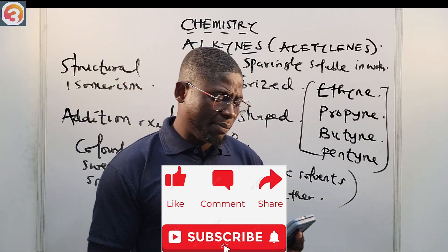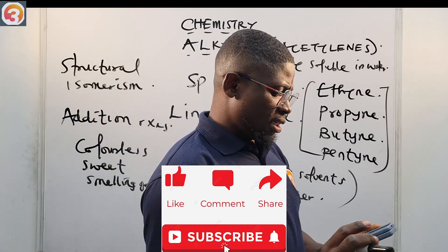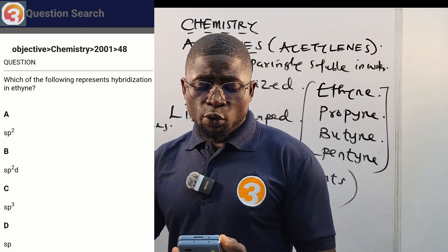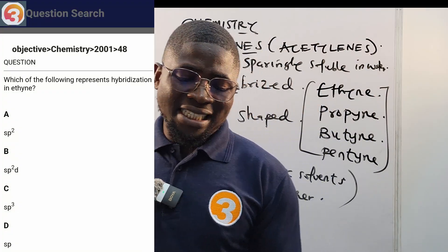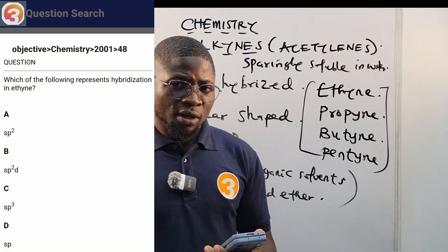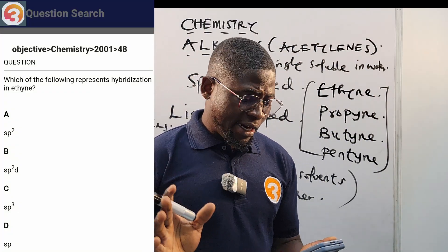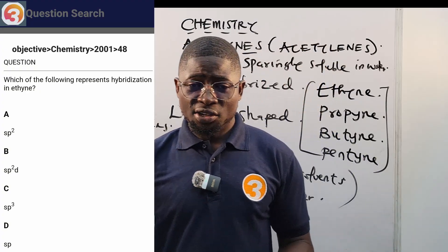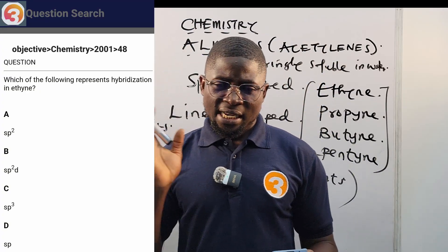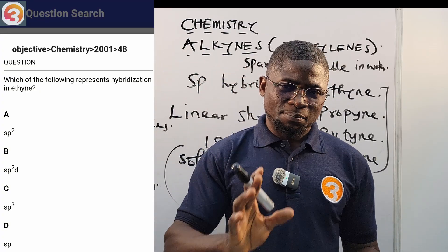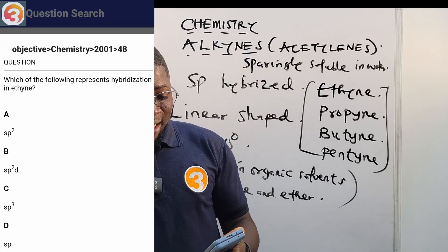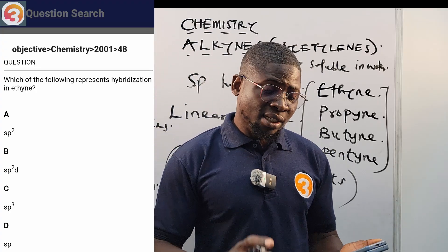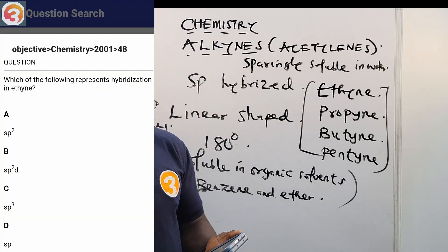Let us answer the question from the app: JAMB 2001 question 48 — which of the following represents hybridization in ethyne? It is already clear: alkynes are sp-hybridized. Ethyne is an alkyne, so the correct answer is option D — sp.